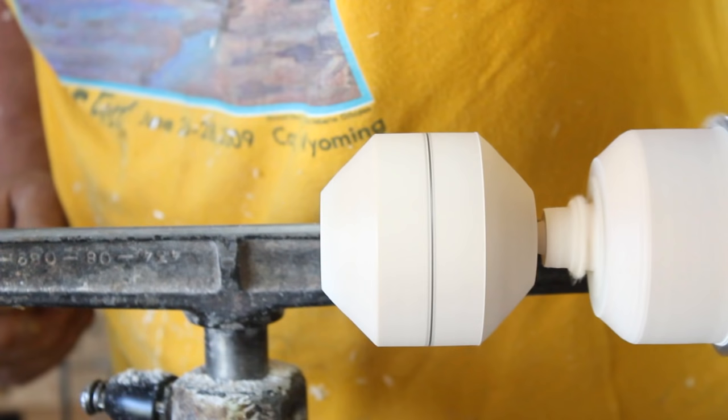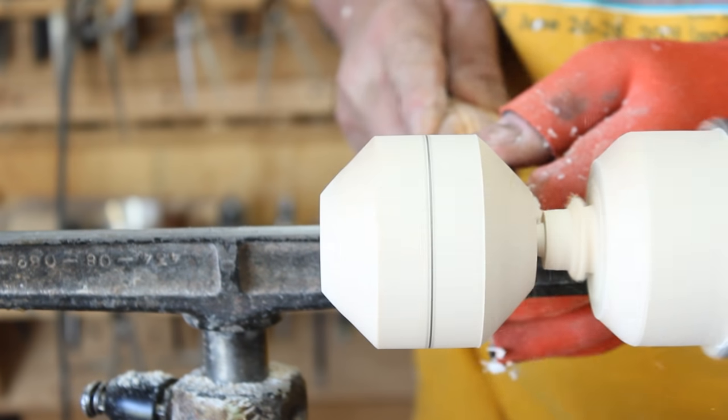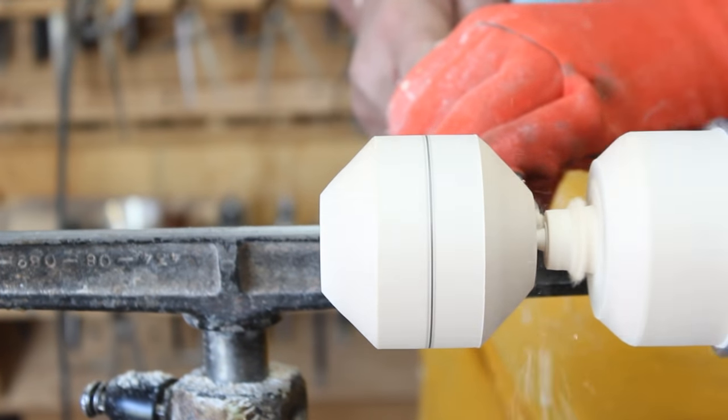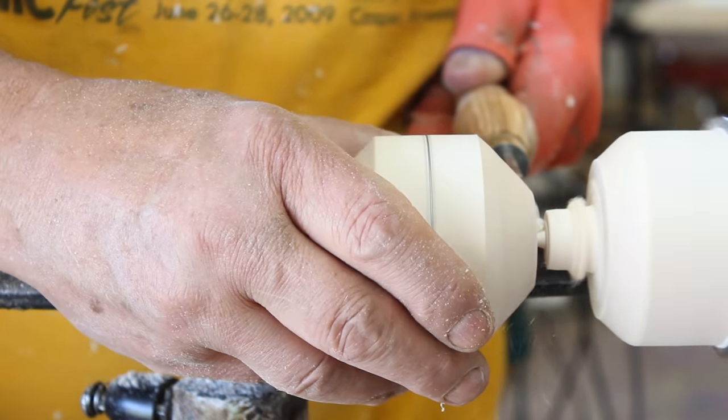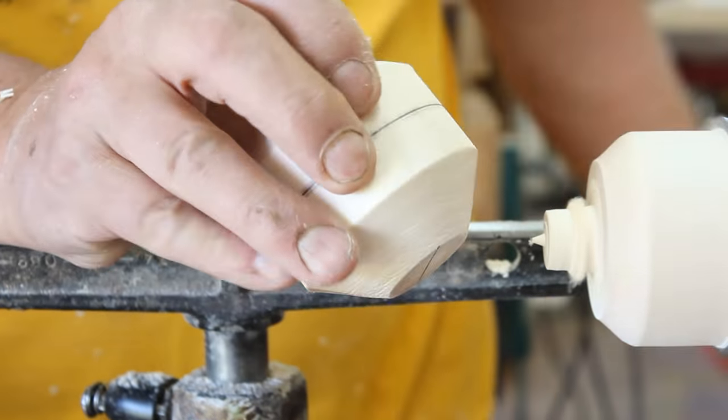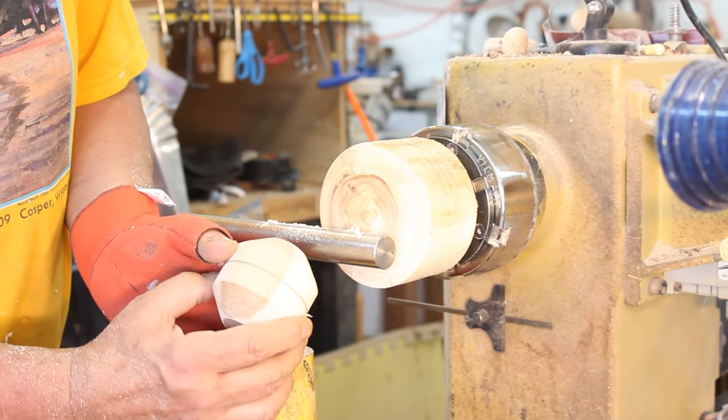Now here's a very good view of the eight-sided figure, the octagon that I've established. And this will be very important in utilizing the jam chuck that I'll make later in the video. Now I'm just taking my parting tool and parting this off with the final dimension onto the jam chuck.